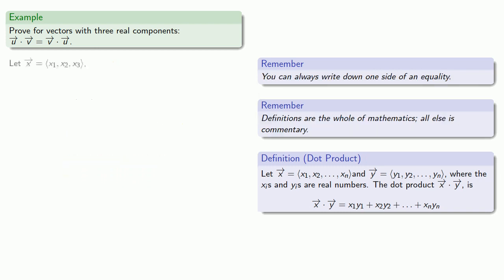So, maybe we'll use vectors X and Y, and our components X1, X2, X3, and Y1, Y2, Y3. So, we can still write down one side, X·Y, and we can still write down the dot product.